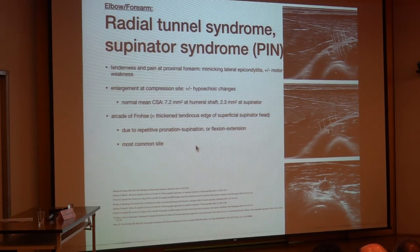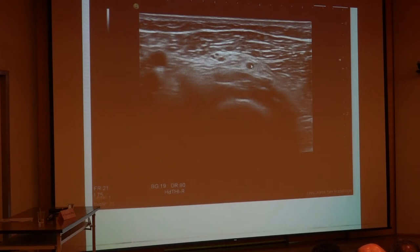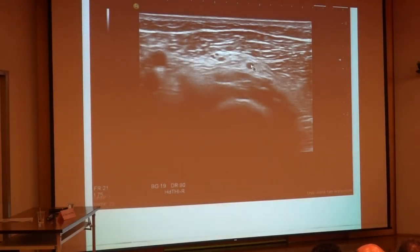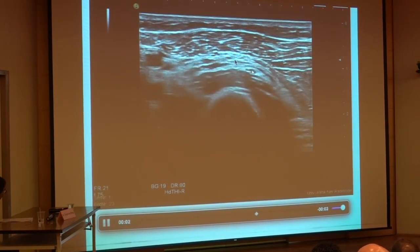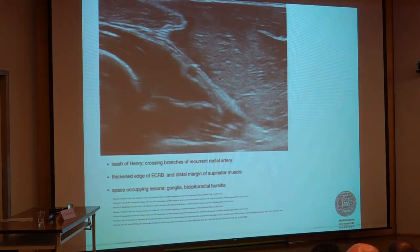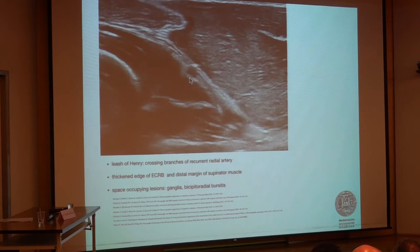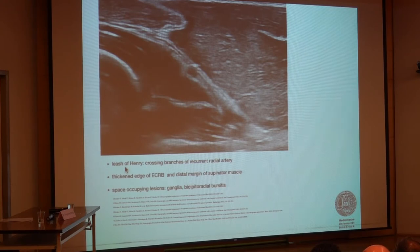It can be due to repetitive pronation and supination or flexion and extension of the arm. In the video, we can see the radial nerve coming down and then a focal enlargement nicely seen at the more proximal level, with more distal levels also possible. The etiology may also be the so-called leash of Henry, which is a thickened branch of the recurrent radial artery, or a thickened edge of the extensor carpi radialis brevis muscle, or space-occupying lesions like ganglia and bicipital radial bursitis.